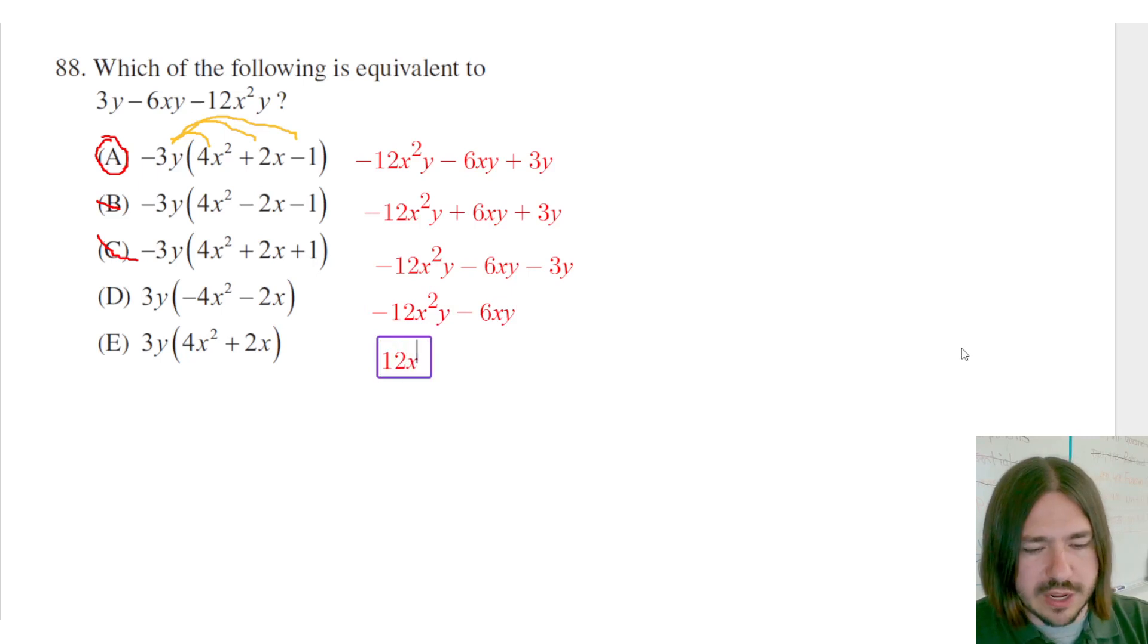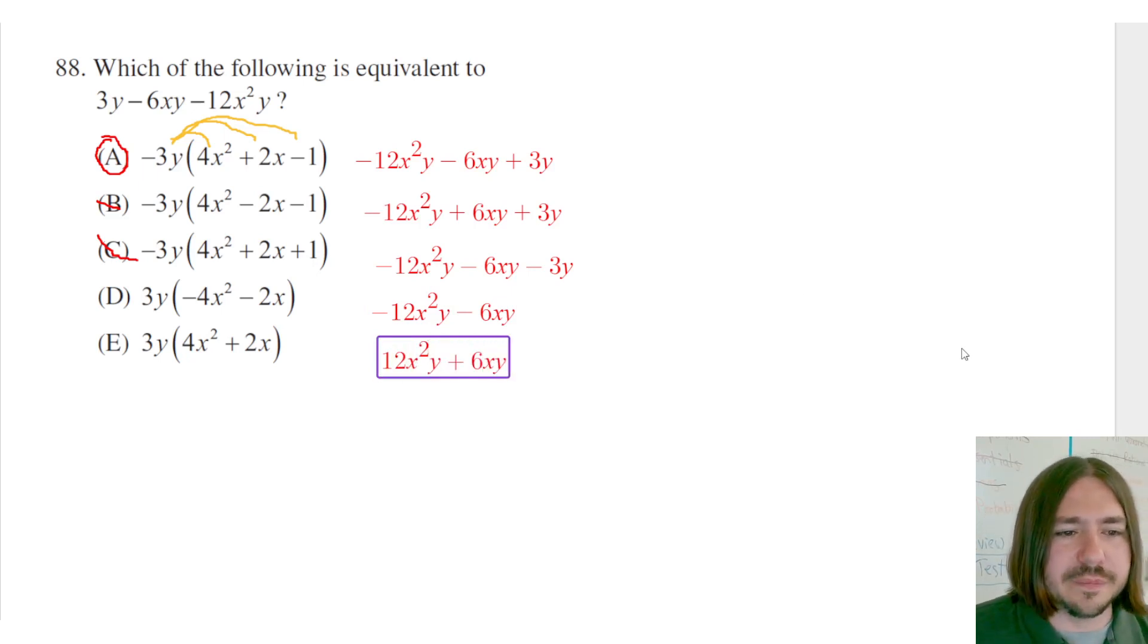And then this last one we can kind of see is not going to work either. We get 12x squared y right off the bat, it's not right, and then plus 6xy. So neither D or E work. The only one here that's going to work is A, and so that's going to be our solution to number 88.